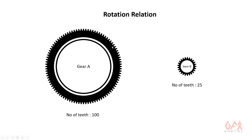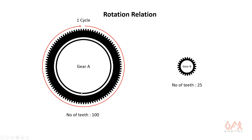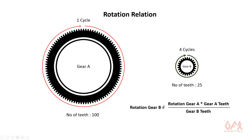There are two relations: one is size and one is rotation. I will talk about the rotation relation first. If this is my master gear and it rotates one cycle, you can easily identify that this other gear rotates four times. So gear B rotation is equal to the rotation of gear A multiplied by the number of teeth in gear A divided by the number of teeth in gear B.